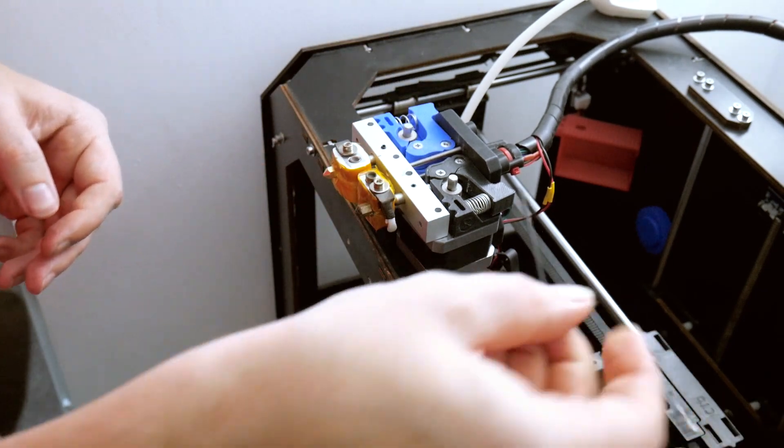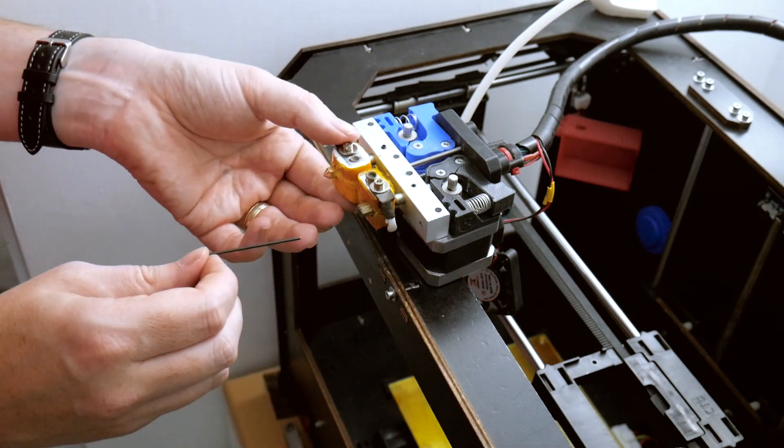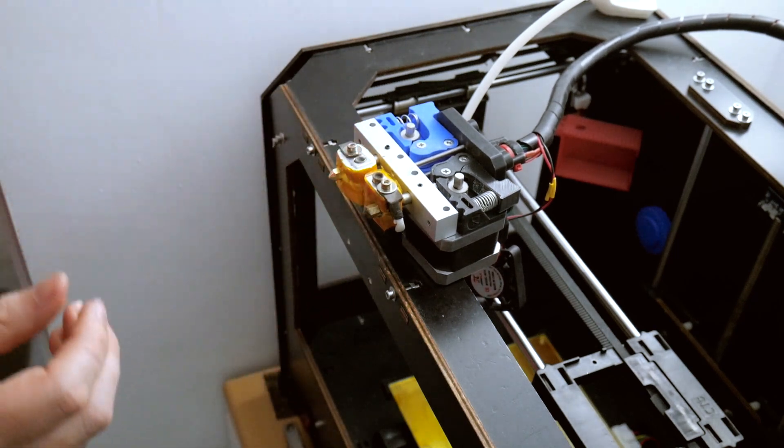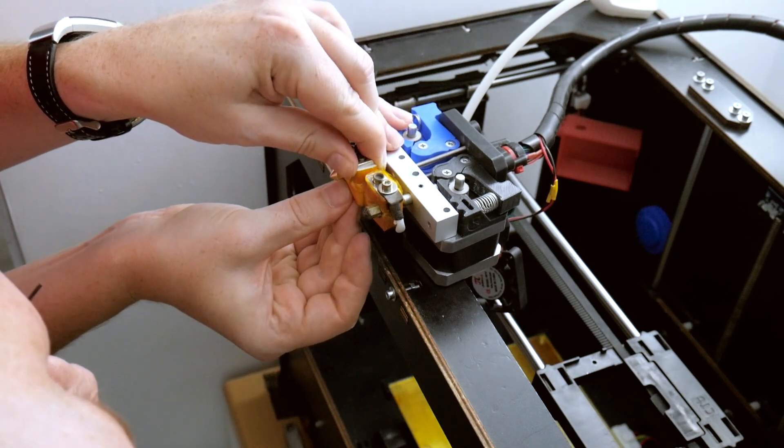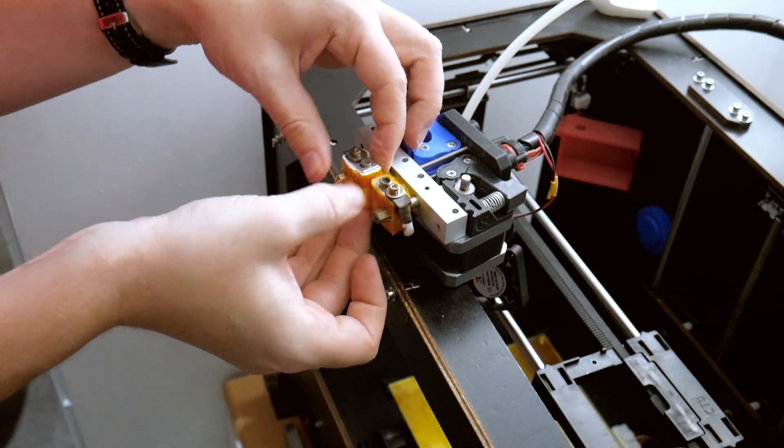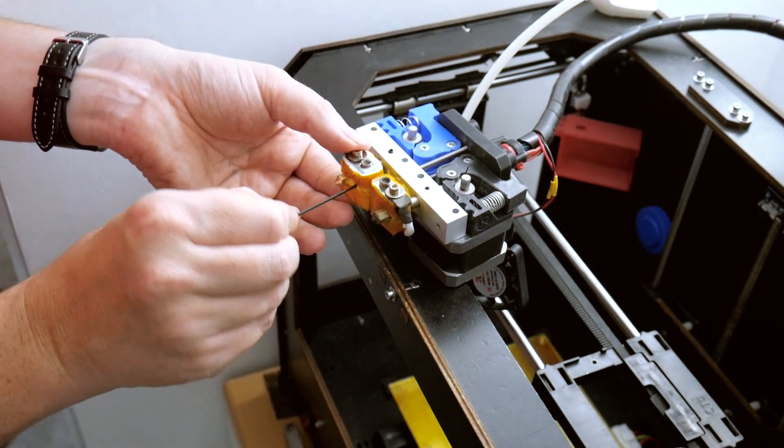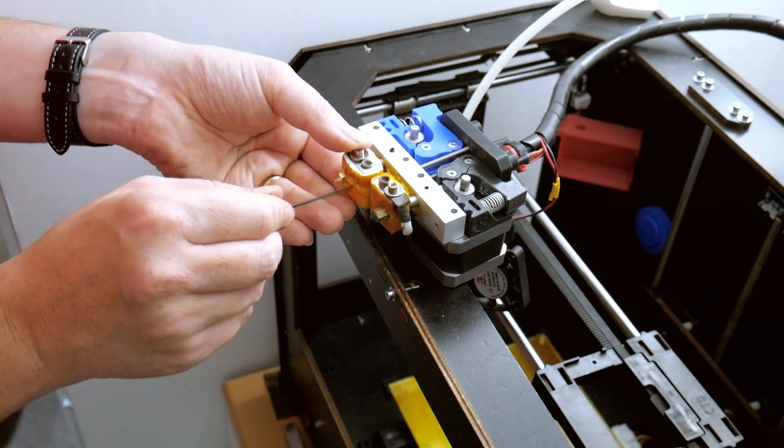The next thing to do is get a very small allen key and tighten the grub screw underneath here for the heater cartridge. So make sure the heater cartridge is all the way in. And then just tighten this grub screw underneath. There we go.